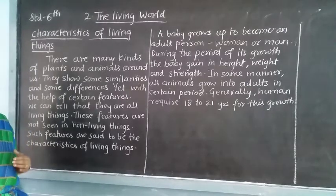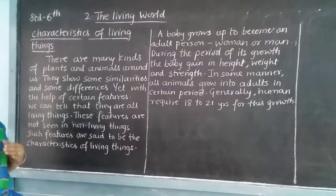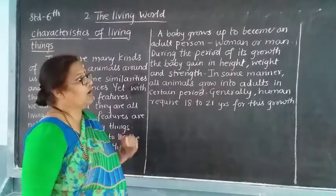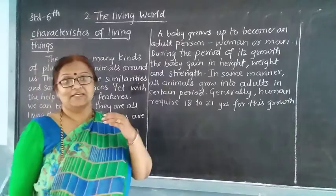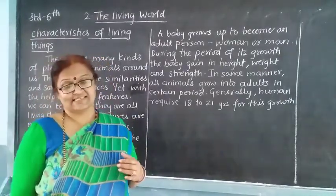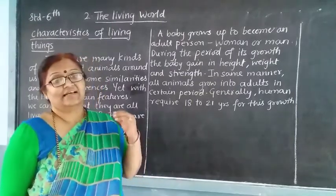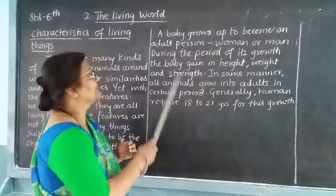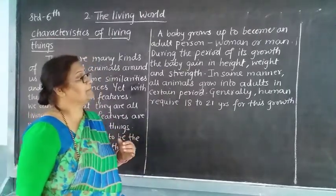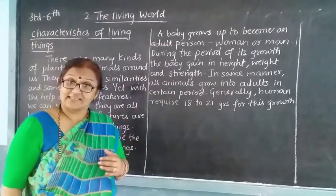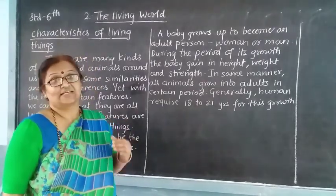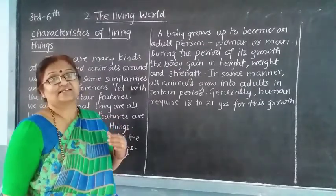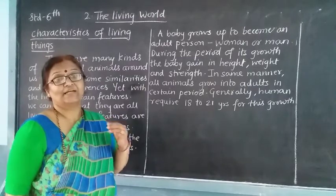The baby grows up to become an adult person — a woman or a man. When a baby is born, it is very small in size. Then it grows and becomes an adult. During the period of its growth, the baby gains height, grows in size, grows in weight, and grows in strength. All these things together make the growth and development of the baby.